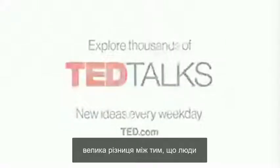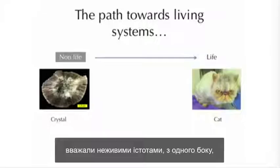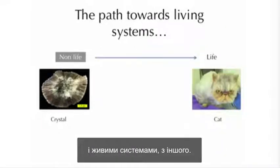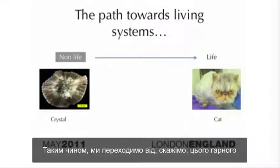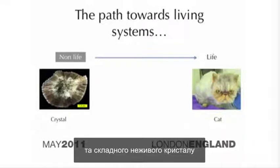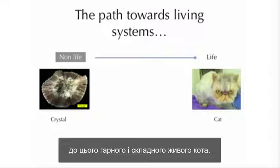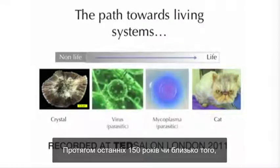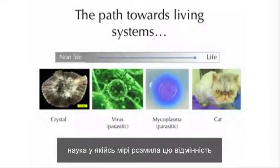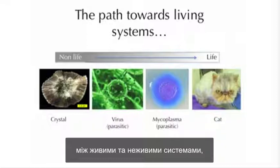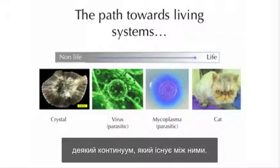Historically, there has been a huge divide between what people consider to be non-living systems on one side and living systems on the other side — from a beautiful and complex crystal as non-life to a rather beautiful and complex cat on the other side. Over the last 150 years or so, science has blurred this distinction, and now we consider that there may be a kind of continuum that exists between the two.